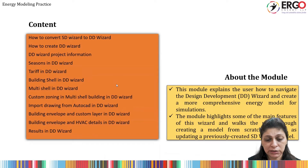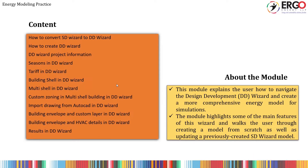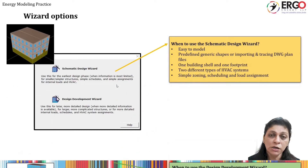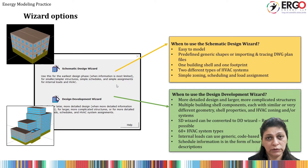In a nutshell, this module is about how to navigate through the DD wizard of eQuest software. It also highlights some main features of this wizard, and users will be able to navigate through different parts of the modeling software. There is major emphasis on the comparison of when not to go for SD wizard and when to go for DD wizard.